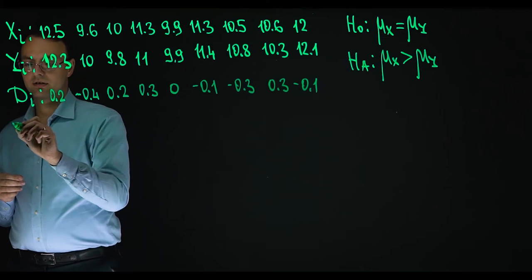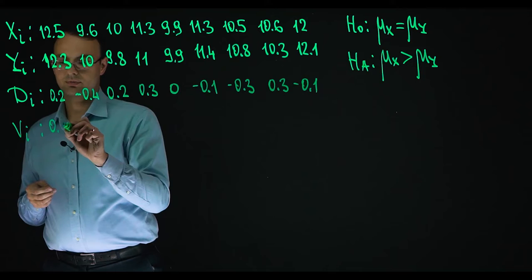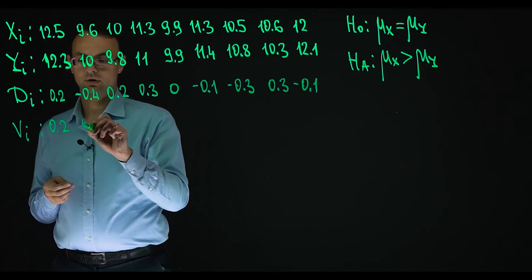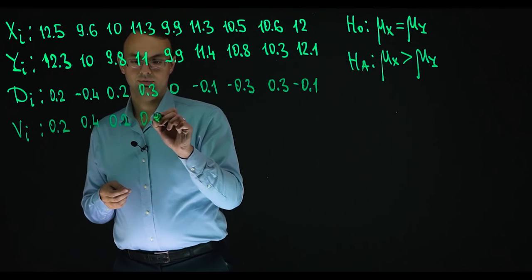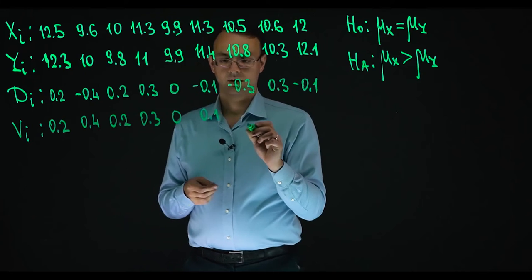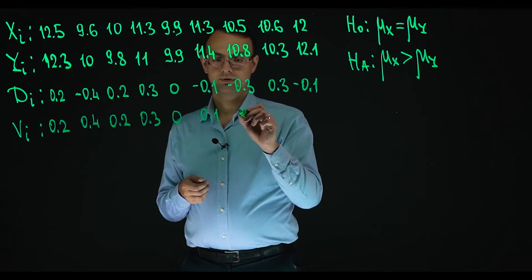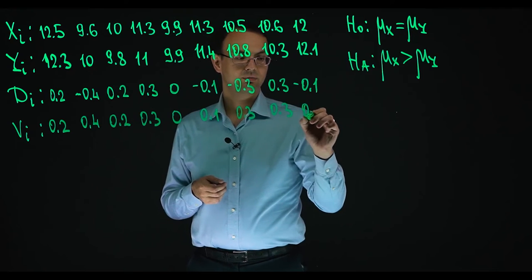Then we are to find their absolute values. So the same but without minuses. So 0.2, 0.4, 0.2, 0.3, 0.1, 0.3, 0.3, 0.1.